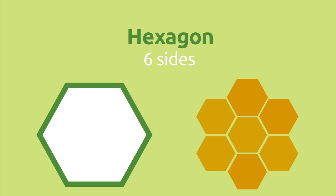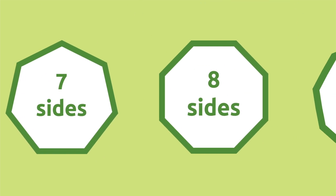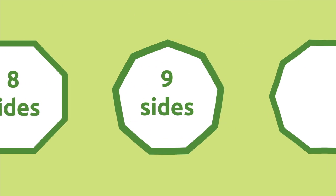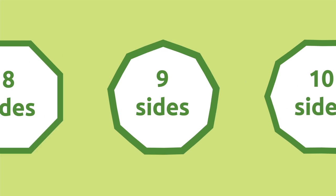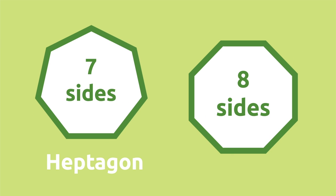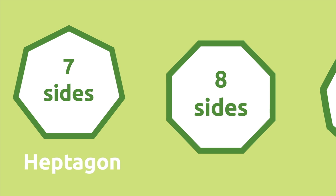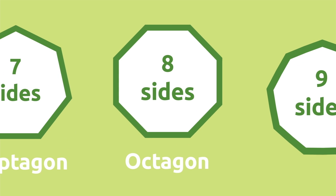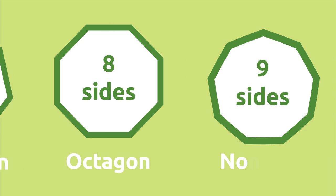There are many types of polygons, but to learn how to name them you need to use the corresponding prefix. It's very easy: a seven-sided polygon is a heptagon and an eight-sided polygon is an octagon, and so on.